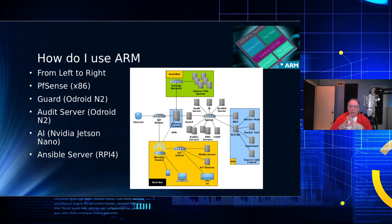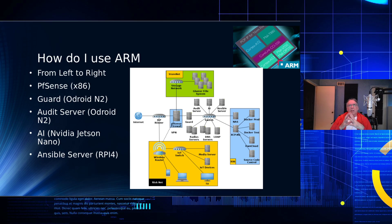The guard is an Odroid N2. The audit server is also an Odroid N2. The AI machine is an NVIDIA Jetson Nano, and that is the one I do run a full desktop on — currently running KDE Plasma, based on Ubuntu 18.04 LTS. The Ansible servers are Raspberry Pi 4.